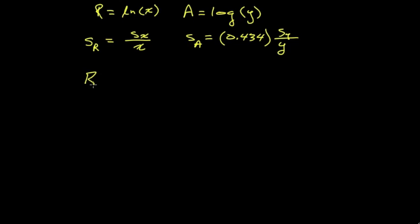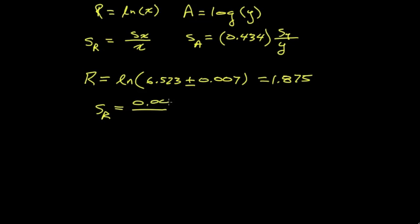For example, if we're doing a calculation taking a natural log of 6.523 and the error involved in that number is 0.007, the result is 1.875 and the absolute error in that result is going to be 0.007 divided by 6.523, or numerically equal to 0.00107. Thanks for joining us.